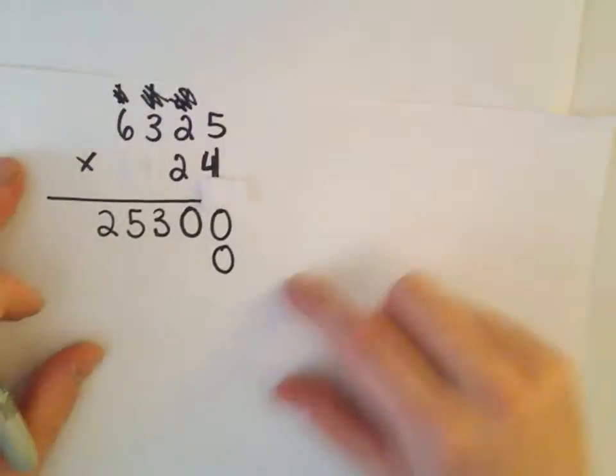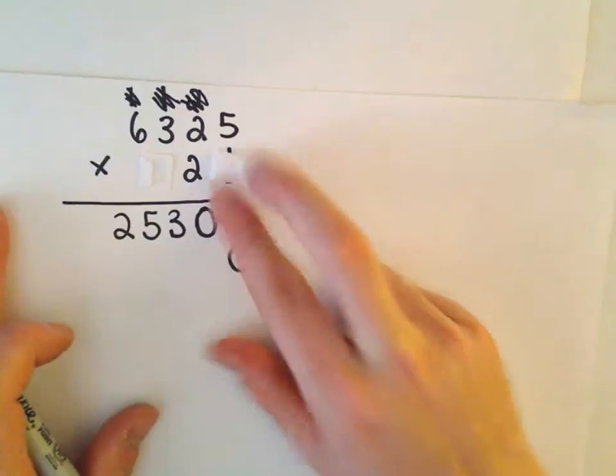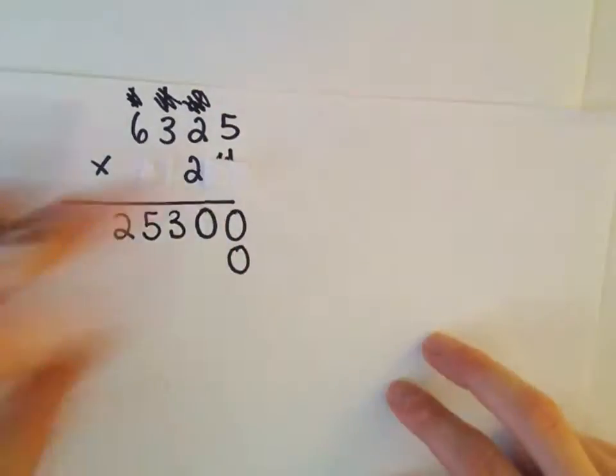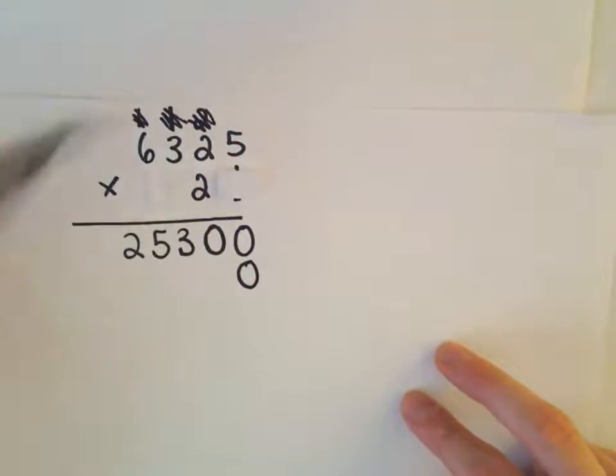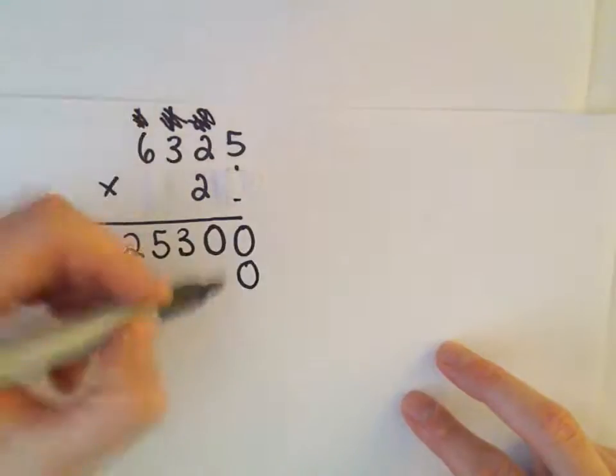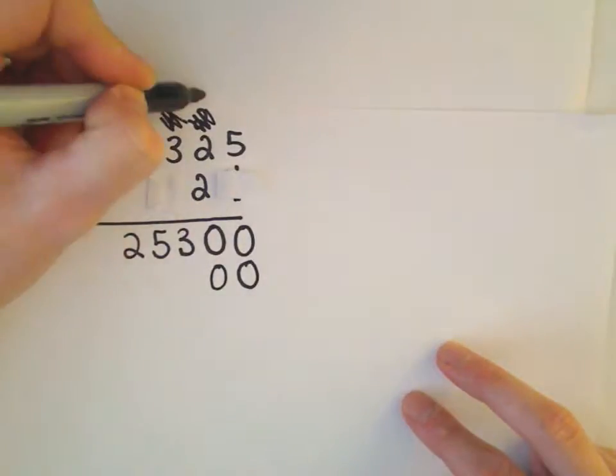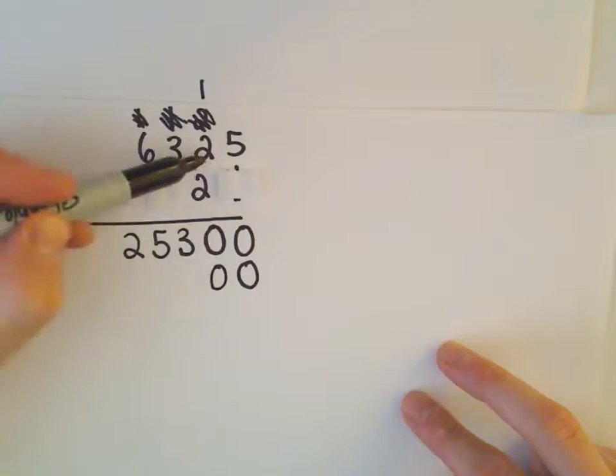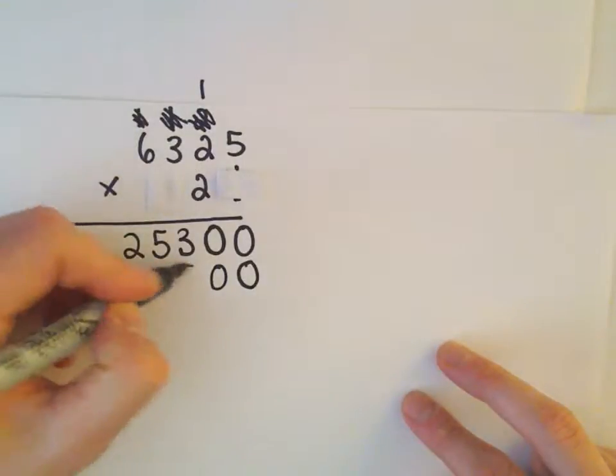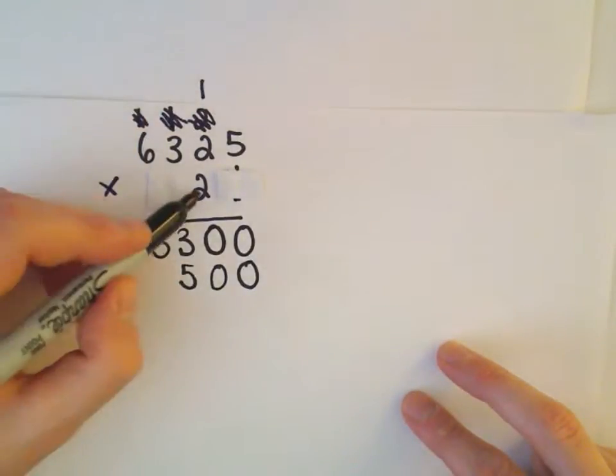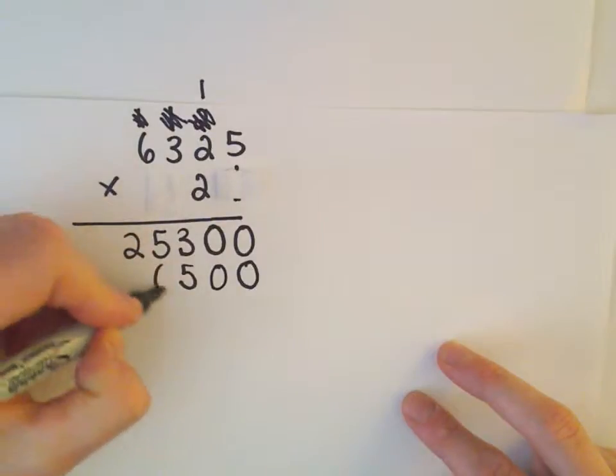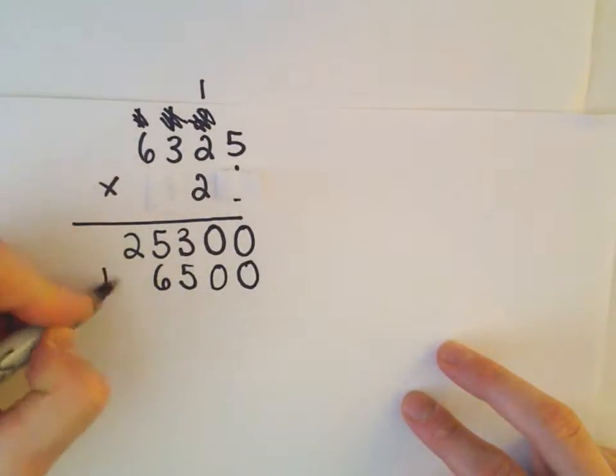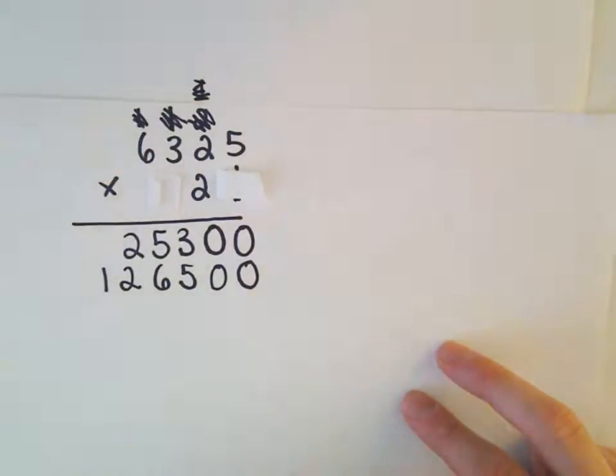Alright, so I think I'm ready here. Let's do our multiplication. So 2 times 5 is 10. So I'm going to keep the 0 and carry a 1 this time. So let's see, 2 times 2 is 4, plus 1 is 5. 2 times 3 is 6, and 2 times 6 is 12. Alright, so I'm going to get rid of my digit that I carry just so I don't accidentally use it again.